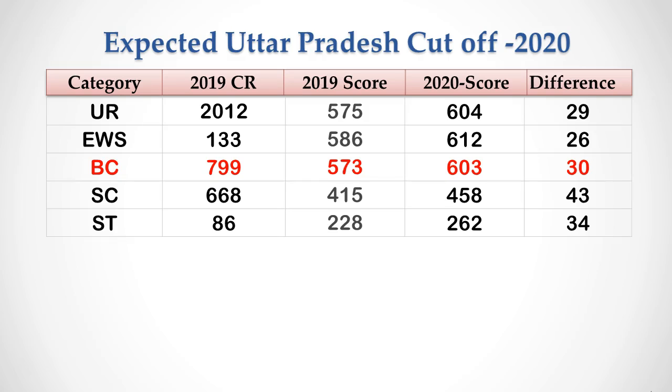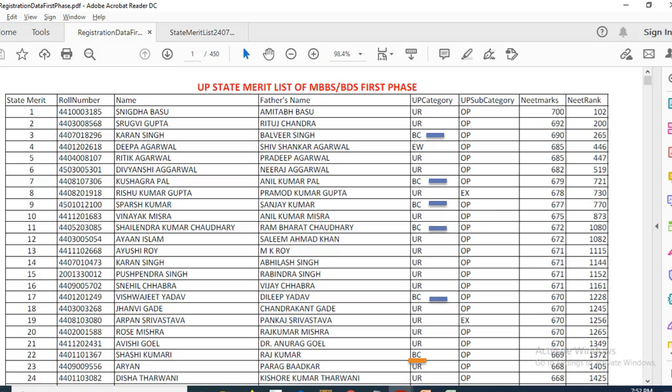If you find it difficult to find your category rank from the Uttar Pradesh 2020 merit list, comment below your reservation category as well as your All India rank to get your UP category rank or community rank. If you liked this video, cheer us by clicking the thumbs up button. Catch you in the next video.